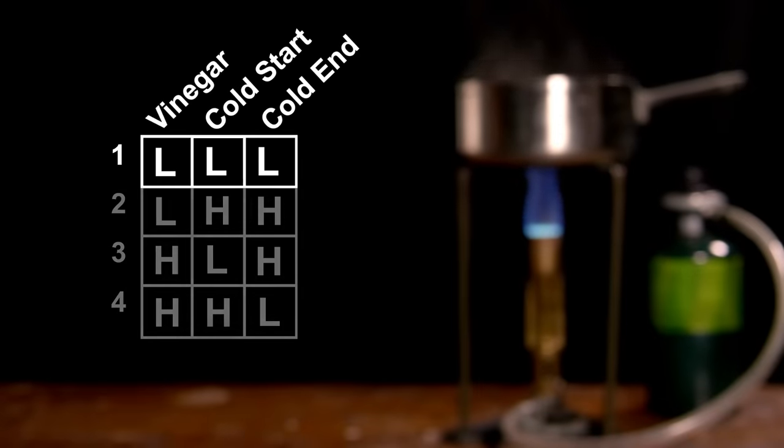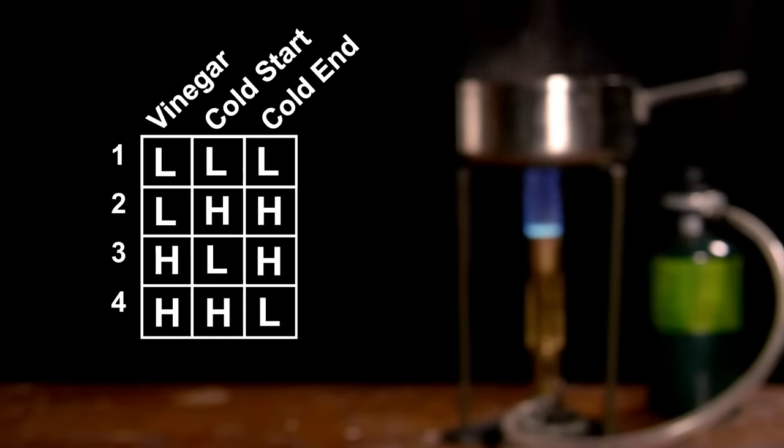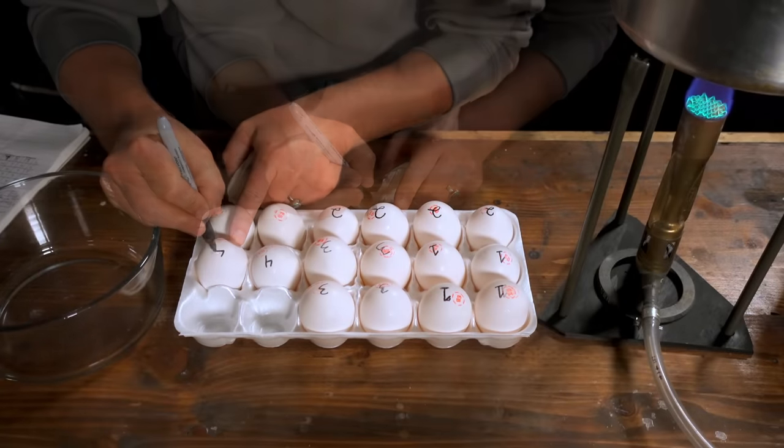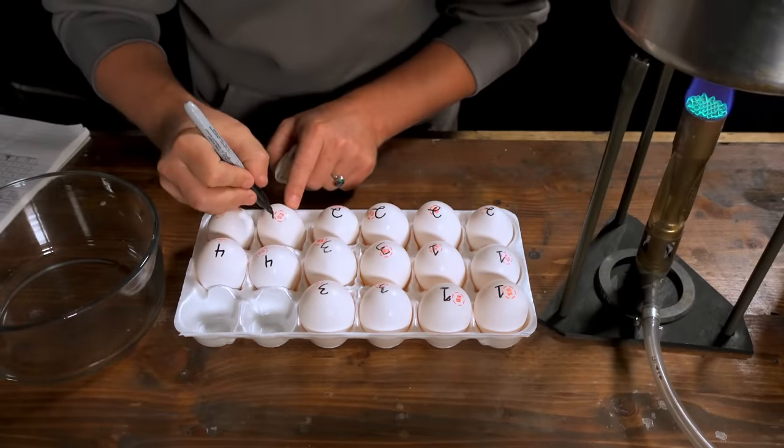You can see that we still have a control group which the other tests can be compared to but after the first run every other test has two different changes occurring at once. There are similar tables that can be used for experiments with many more variables but we'll get to that later. With this arrangement we only need to do four tests so let's get started.